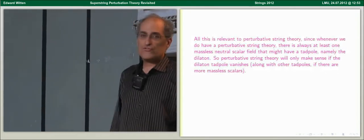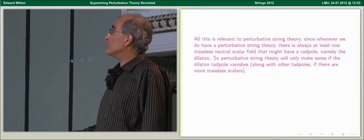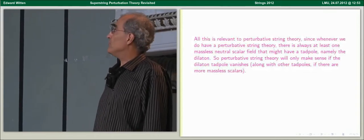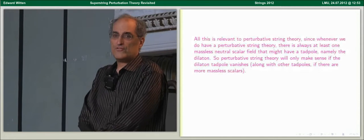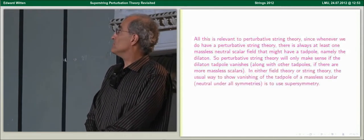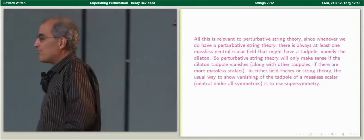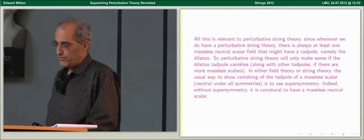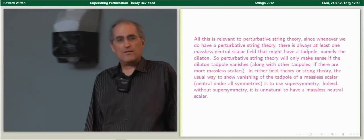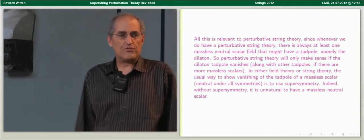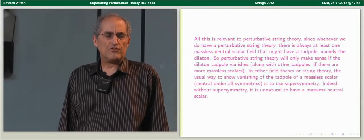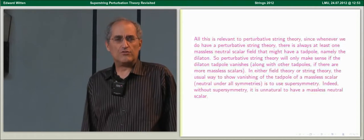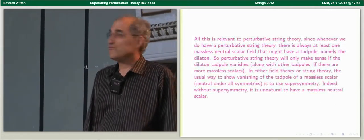All this is relevant to superstring perturbation theory because whenever we do have a perturbative string theory, there's always at least one massless neutral scalar to worry about, namely the dilaton. So perturbative string theory only makes sense if the dilaton tadpole vanishes. In either field theory or string theory, the usual way to show that the tadpole vanishes is to use supersymmetry. Without supersymmetry, the question doesn't usually arise because it's unnatural to have a massless neutral scalar, except in the case of Goldstone bosons, where you would use the underlying spontaneously broken symmetry to prove the absence of the tadpole.